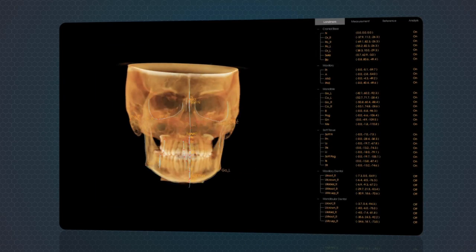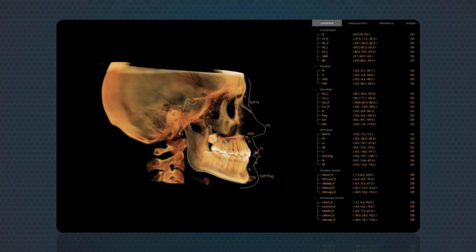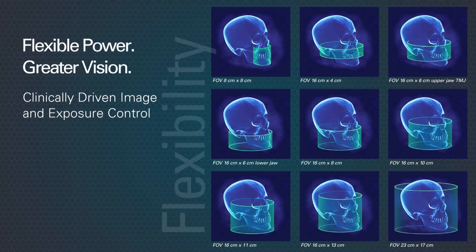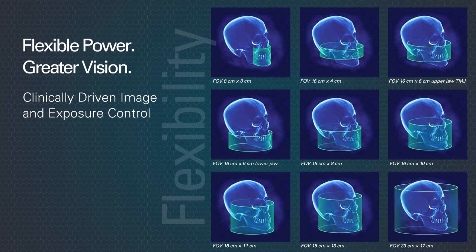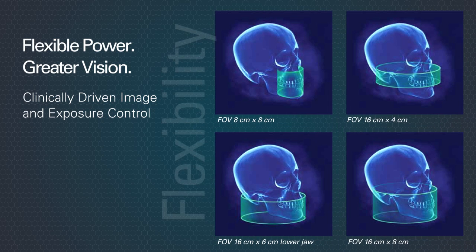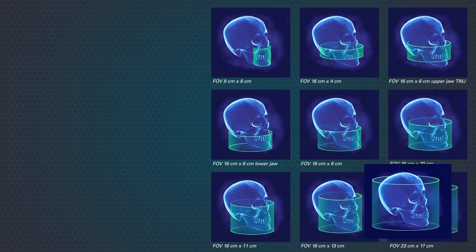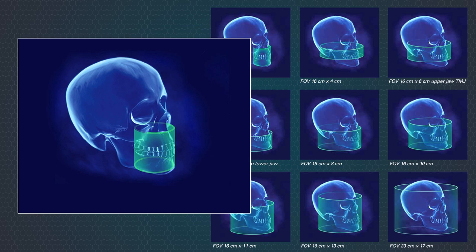The field of view of the iCAT has been optimized for orthodontics and includes views from soft tissue below the chin past the nasion. When full views are not required, iCAT's patented eye collimator technology can electronically reduce the field of view to the area of interest. Choose from the whole head down to just the maxilla or mandible or anywhere in between.